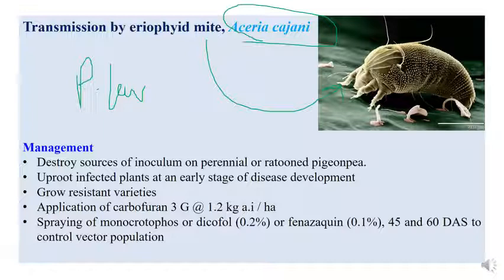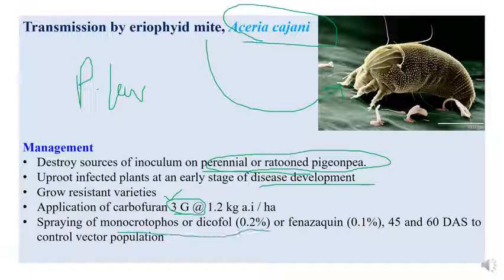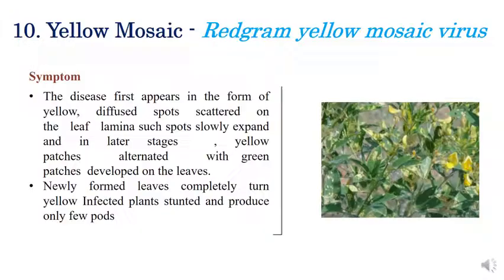For management of sterility mosaic: destroy the inoculum of perennial pigeon pea and uproot infected plants in the early stages of disease development; grow resistant varieties; apply carbofuran 3G at 0.1–0.2 kilograms active ingredient per hectare; spray monocrotophos or dicofol at 0.02 percent or phenazepin at 0.1 percent at 45 to 60 days after sowing to control the vector. Controlling the vector automatically controls the viral disease.